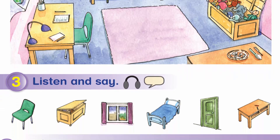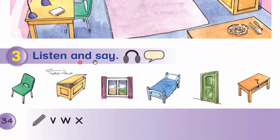Activity 3: Listen and say. What's this? It's a chair. What's this? It's a box. What's this? It's a window. What's this? It's a bed. What's this? It's a door. What's this? It's a table.